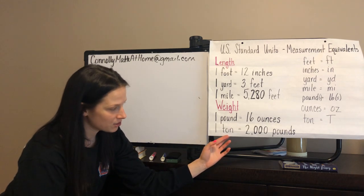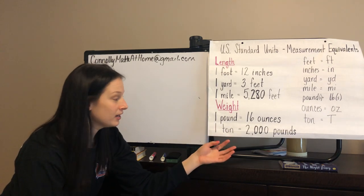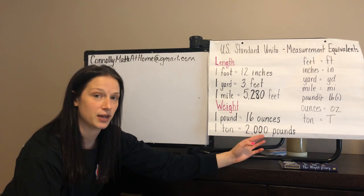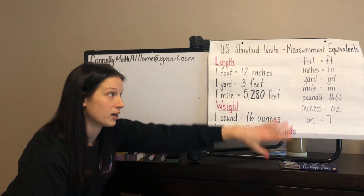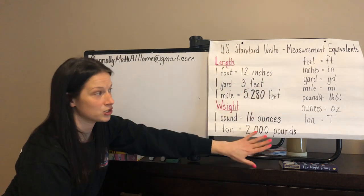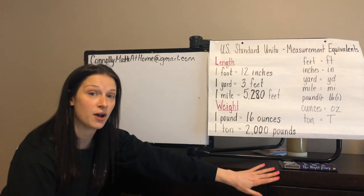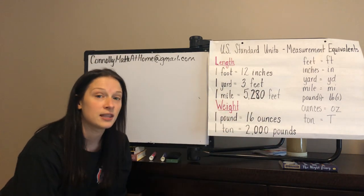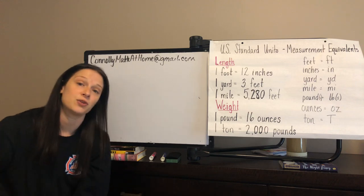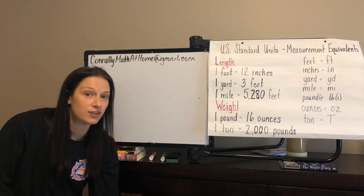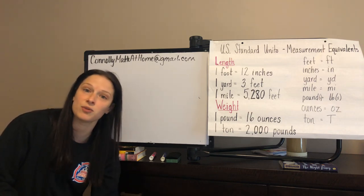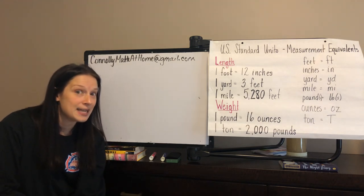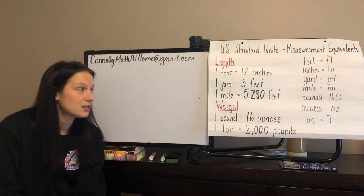Another big measurement: one ton is the same as 2,000 pounds. I want you to take a picture of this or jot it down — pause the video so you can write these down. They should be memorized. You're going to be using these conversions for the rest of your life. You're going to use them in real world problems, so please get those written down and commit them to your memory.